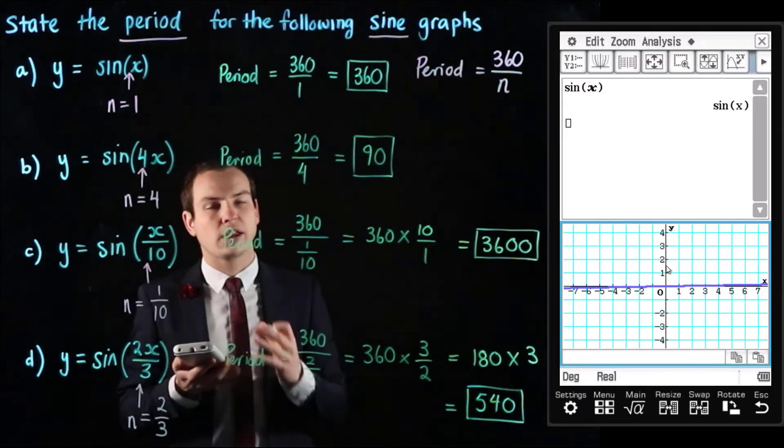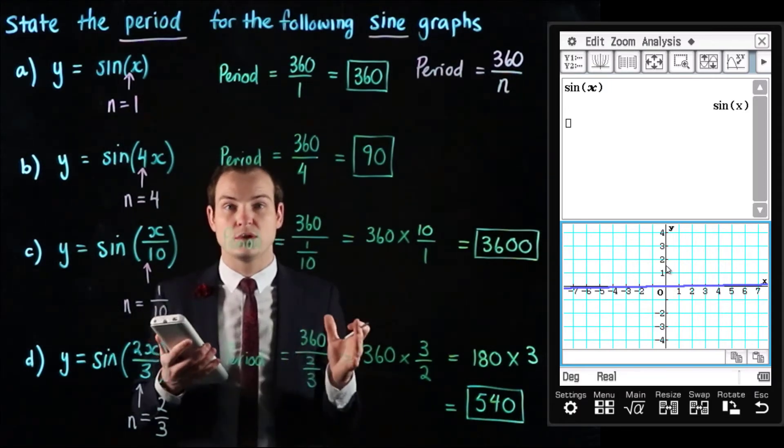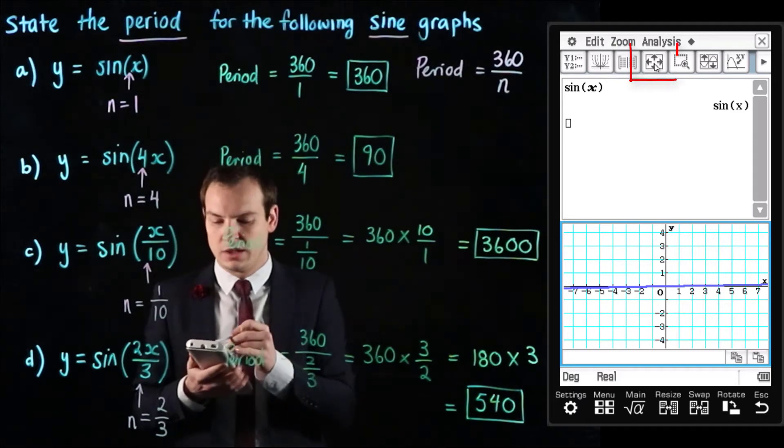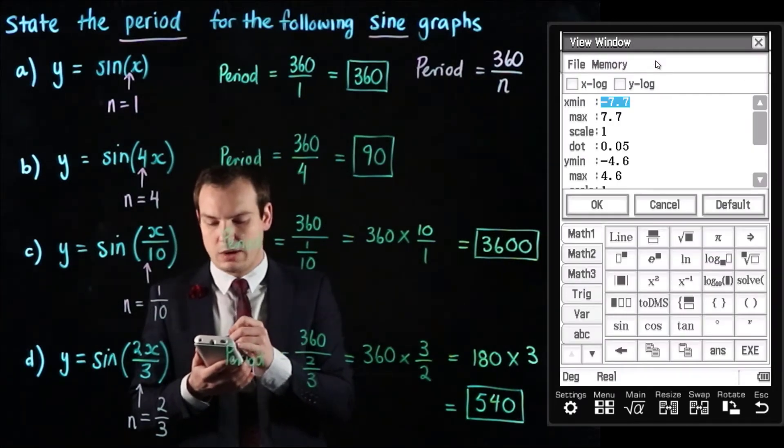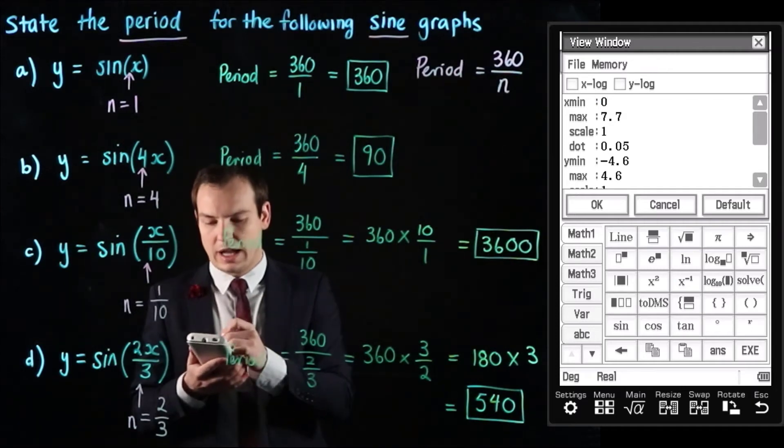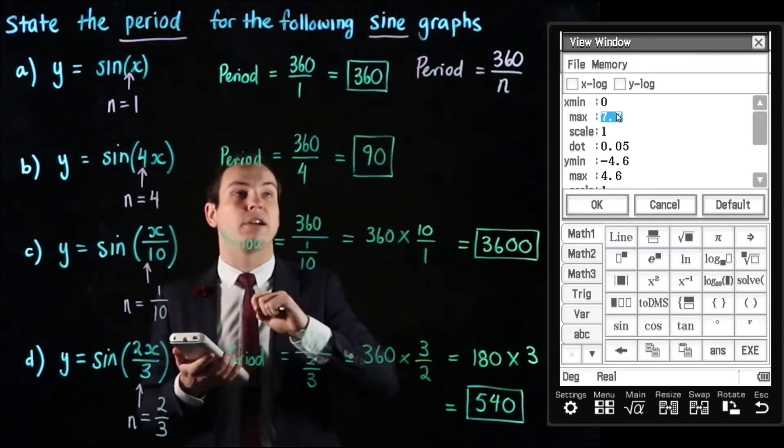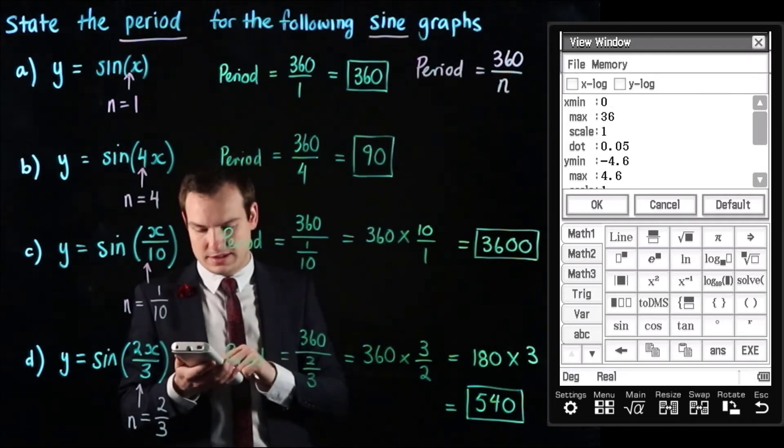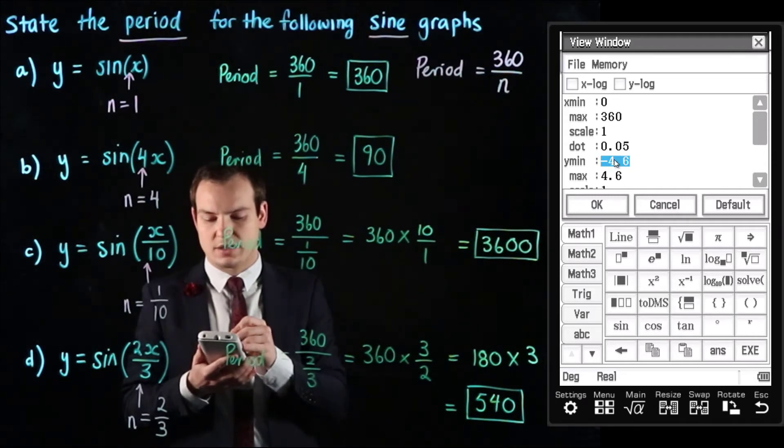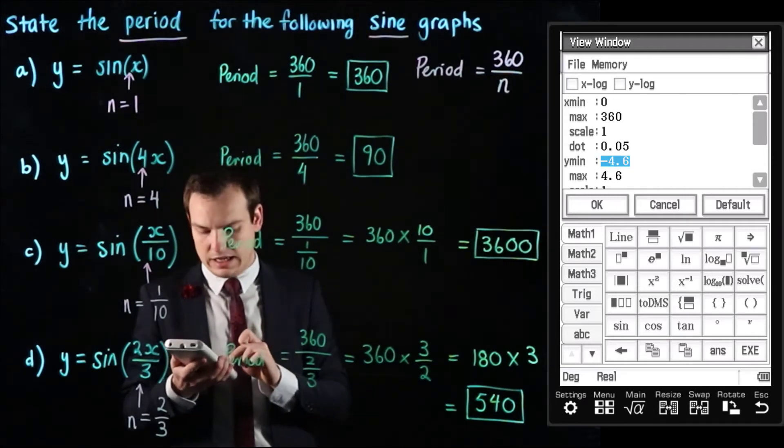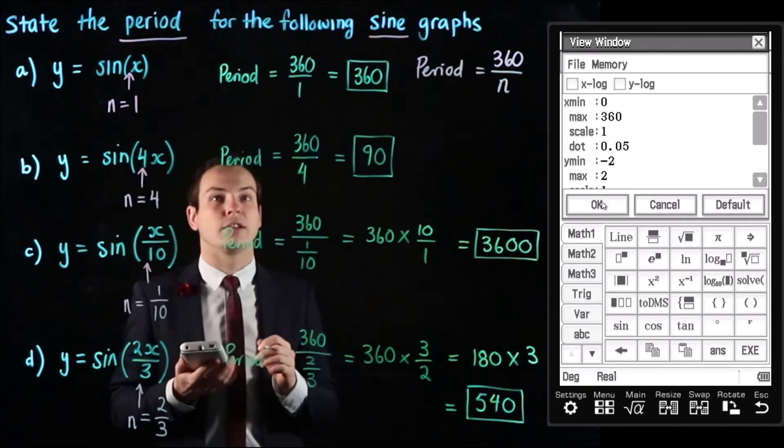We don't get a very good look at this graph. So what we need to do is we need to adjust the view screen so that we can see one cycle of the graph. So to do that we're going to hit the four arrows up the top and we're going to change our x minimum to zero and for part a our x maximum is going to be the value of the period. So I'm going to type 360 in here. Then the y min and the y max I'm just going to change to be negative 2 and 2 and that'll just allow us to get a slightly better look at the graph.